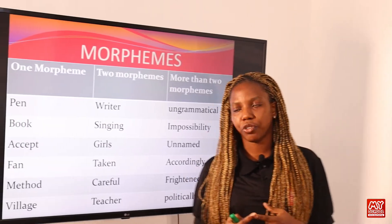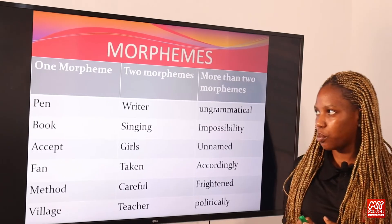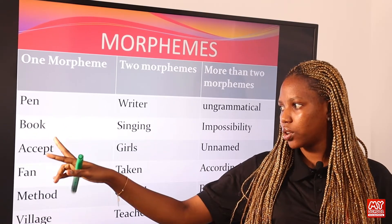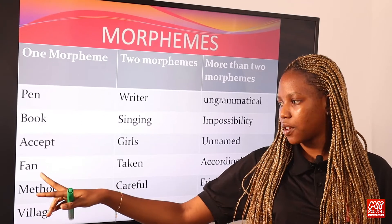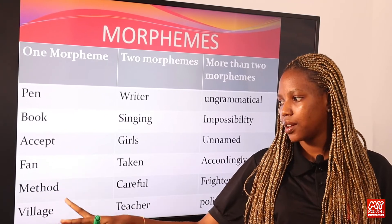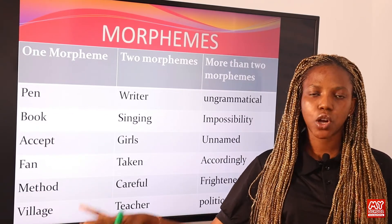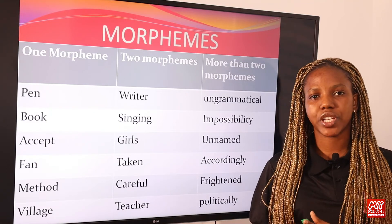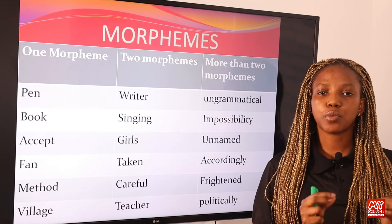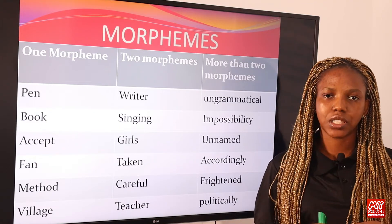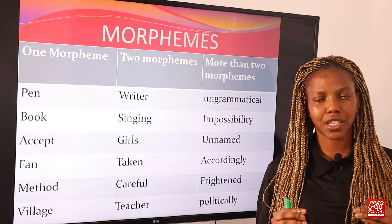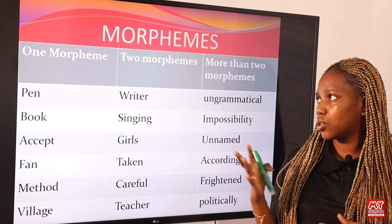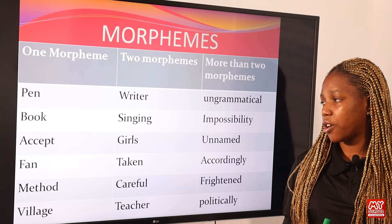Now let's take a look at more examples of morphemes. Examples of one morpheme: we have pen, book, accept, fan, method, and village. All of these can stand on their own. They are small meaningful units — they have meanings on their own.